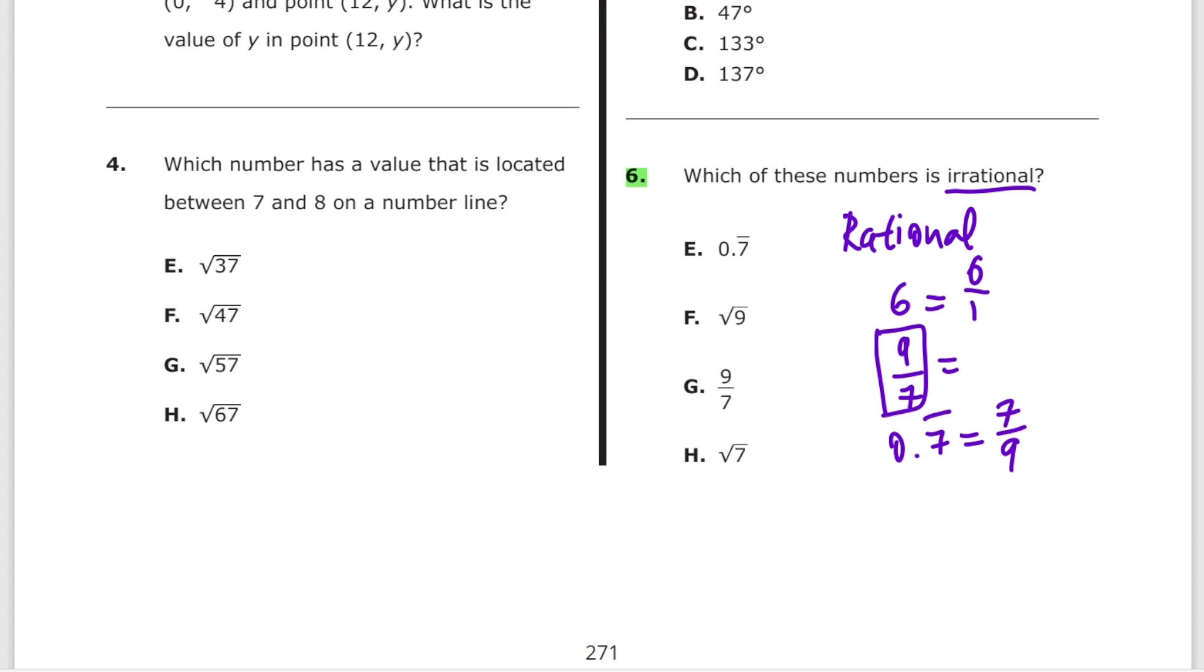Now what is irrational? Typically irrational is pi, e, or square roots of numbers that don't have a perfect square inside such as square root of 3 or square root of 5 or square root of 7 and so on. So let's go through the multiple choices. E, 0.7 repeating, that's rational because that's 7 over 9. F, square root of 9, that's equal to 3, that's a rational number as well because that's 3 over 1. So F is also out. G is a fraction by itself so G is also out and clearly H is the answer.